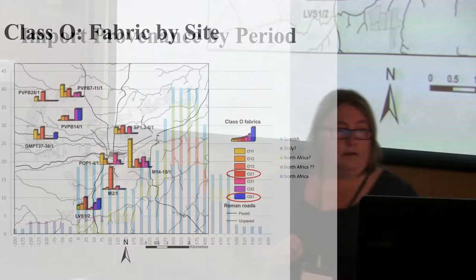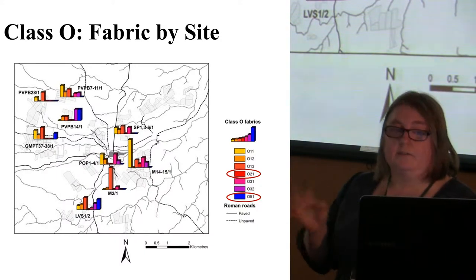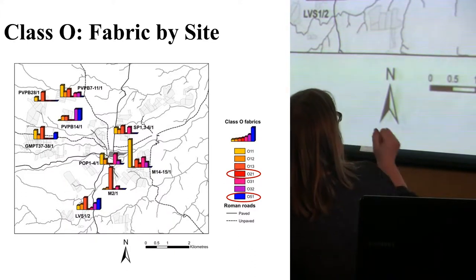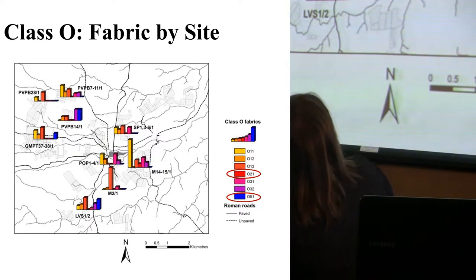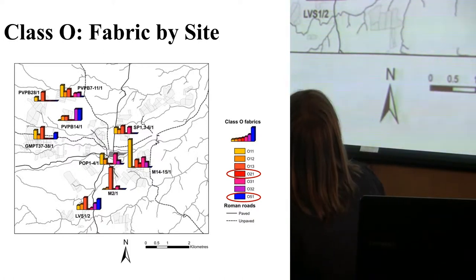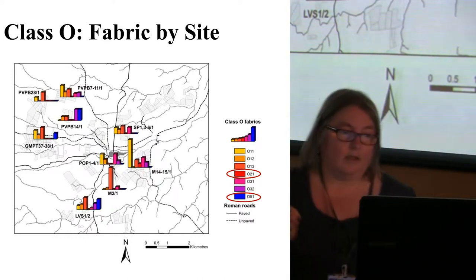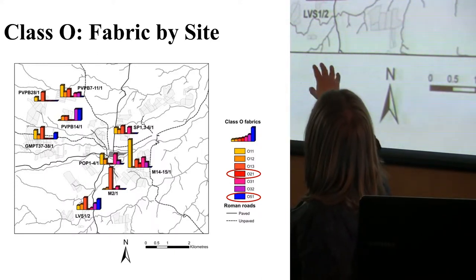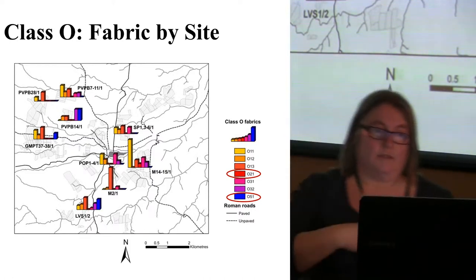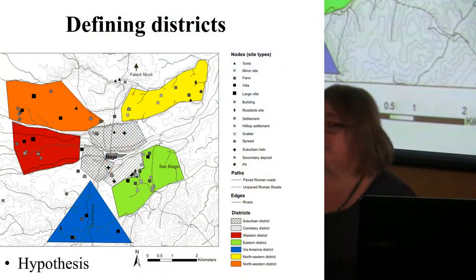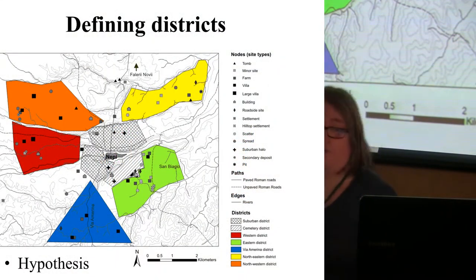More analysis on the basis of different fabrics of the oxidized wares: do notice the fabric 051, which is the late Roman one, which seems to bypass the urban center totally and suggests the strength of the villas. All these sites are villa-sites where you have this fabric in this distribution map. So you can use your data in order to see different supply networks.